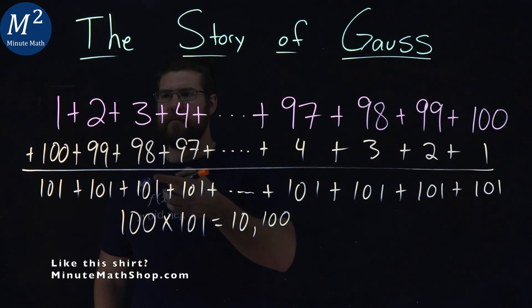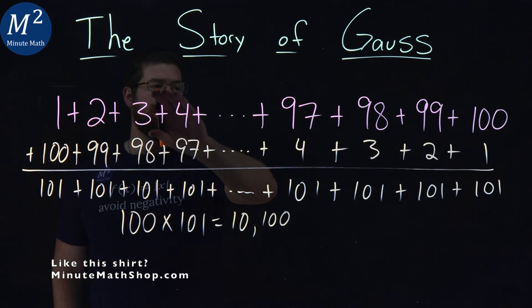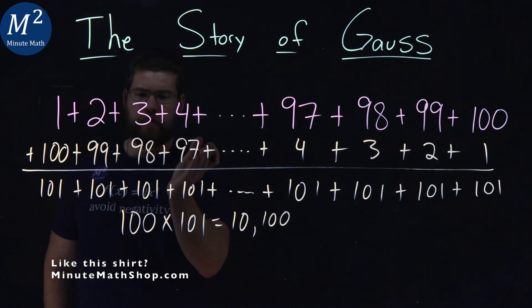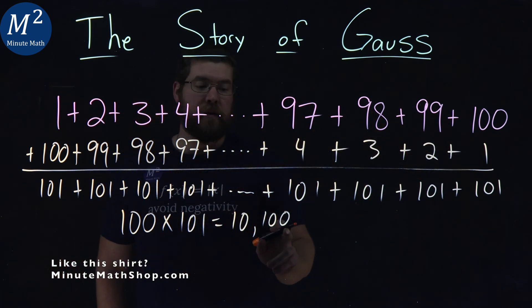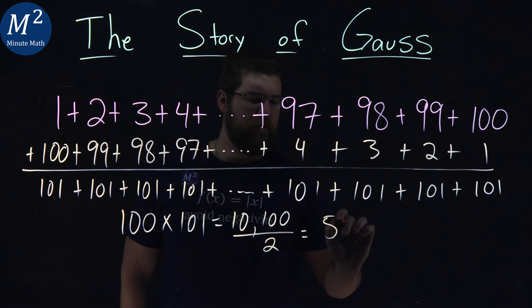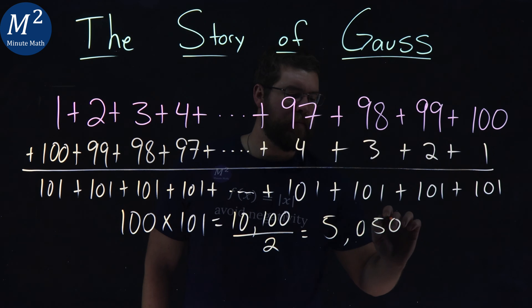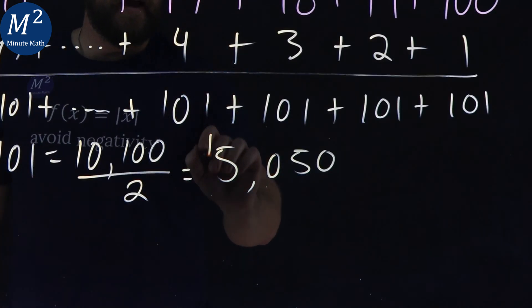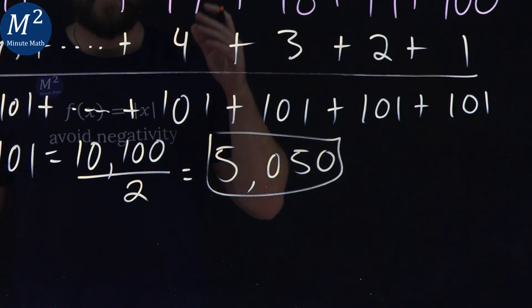But there's two of them, right? We had the sum of the first sum of 100 digits, and again, reversely, give us 10,100. He then said, let's divide that by 2, and got 5,050. And very quickly, you can get the answer of 5,050.